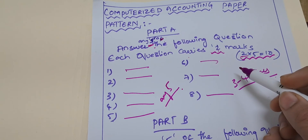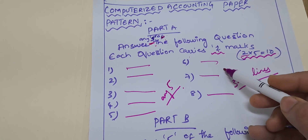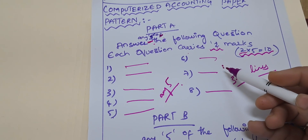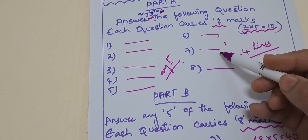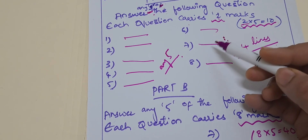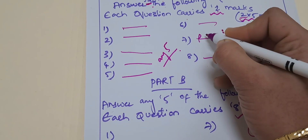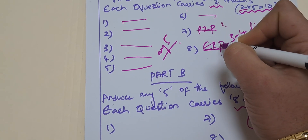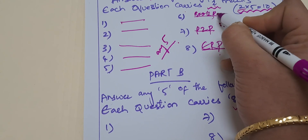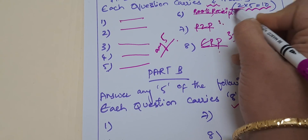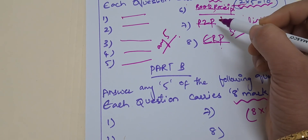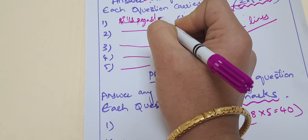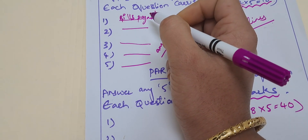The short questions will cover topics like accounts payable, accounts receivable, management, or 'What is ERP?' — you have to explain these in short. Sometimes they'll ask about P2P (procure to pay). These types of short questions will include topics like book receipt and bills payable.